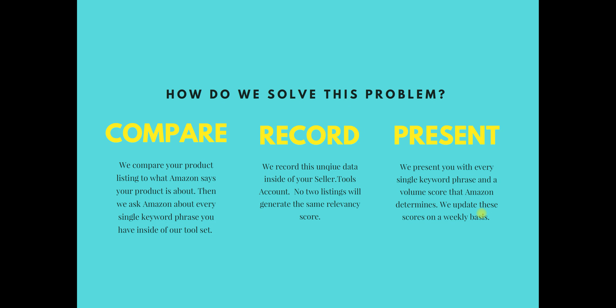So how do we solve this problem? First, we compare your product listing to what Amazon says your product is about. Then we ask Amazon about every single phrase that you put in our tool. If you put 'water bottle,' 'insulated water bottle,' 'water bottle plastic' in our tool, we compare those keywords to your listing. We record that into Seller Tools and show it to you, because no two listings are the same — that data is relative to your product individually.